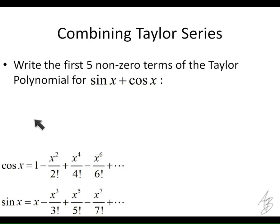So how would we write the first five non-zero terms of this? What would be the first term? 1 plus x plus minus x squared over 2 factorial plus minus x cubed over 3 factorial plus x to the fourth over 4 factorial.